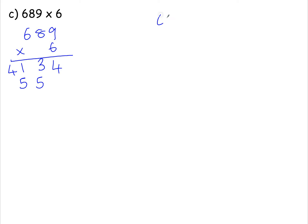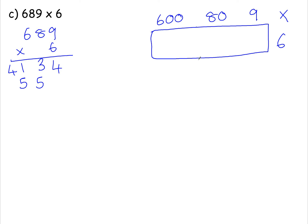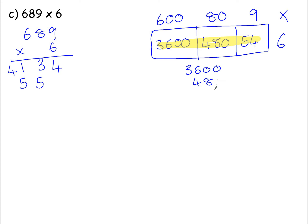The box method: split 689 being multiplied by 6. Draw yourself a box — each number needs a box each. Then 9 times 6 is 54. 80 times 6 is 480. 600 times 6 is 3,600. Then add these three numbers together using a tower sum: 3,600, 480, and 54. Add these up and notice you get the same answer as for the traditional method.